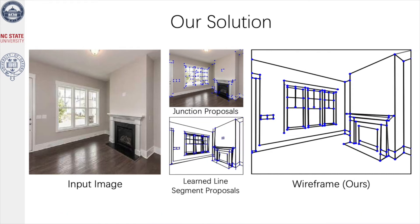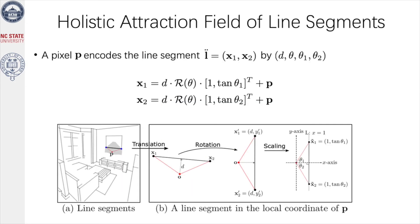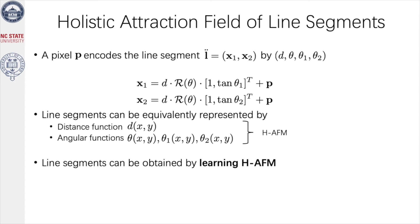By contrast, our method learns line segments from images without enumerating junction pairs. The line segments are learned from their dual representation: the holistic attraction field. In the holistic attraction field, any pixel encodes its nearest line segment by a 4D vector. Therefore, we can recover the endpoints from 4D vectors, and we generate line segment proposals by learning the holistic attraction field.